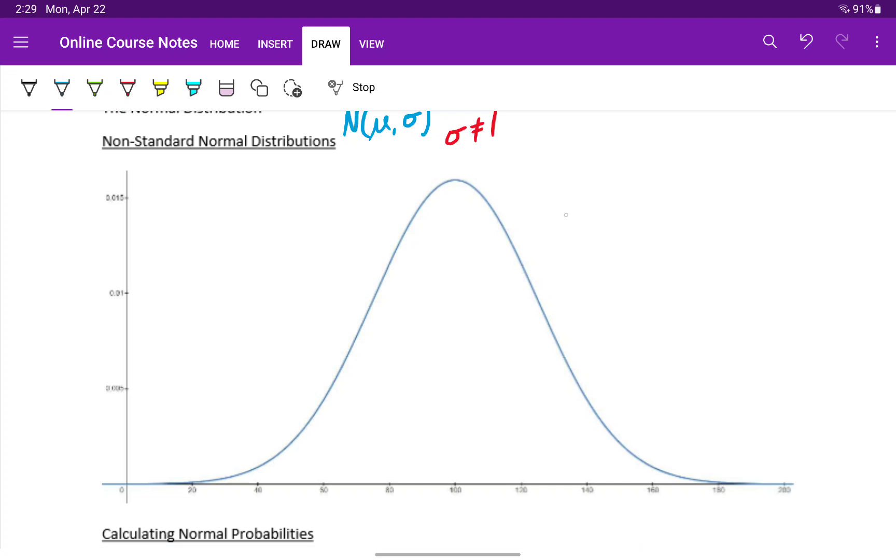For instance, what we have pictured here is a normal distribution with a mean of 100 and a standard deviation of 25. We can see the distribution is centered at 100, still unimodal, still symmetric. It's just been shifted along the x-axis to be centered at this new mean.